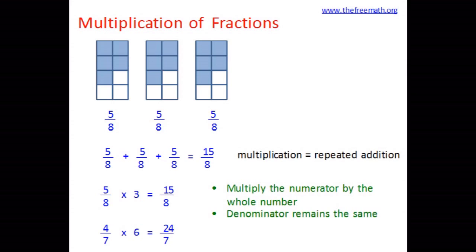Let's look at one more example 4 over 7 multiplied by 6. So what we will do, we will multiply 6 by 4, so 6 fours are 24, the denominator remains the same.